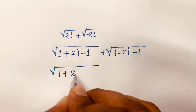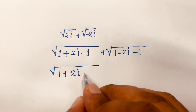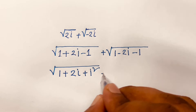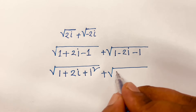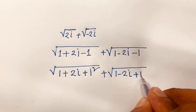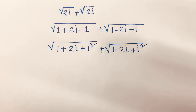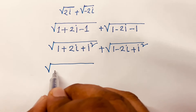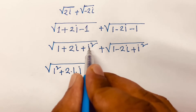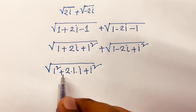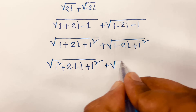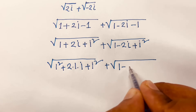Now, recognize that -1 = i², so we have √(1 + 2i + i²) plus √(1 - 2i + i²). Expanding, 2 × 1 × i = 2i, which matches our expressions.